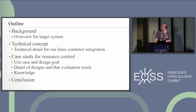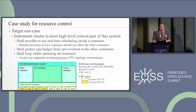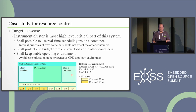The third point is a case study for resource control, which is more detail on the technical concept. The target use case: the instrument cluster is the most high-level critical part of the system. It shall be possible to use real-time scheduling inside a container. Internal properties or priorities of one container should not affect other containers. It shall protect a CPU budget from overload in other containers and shall keep a stable operating environment.